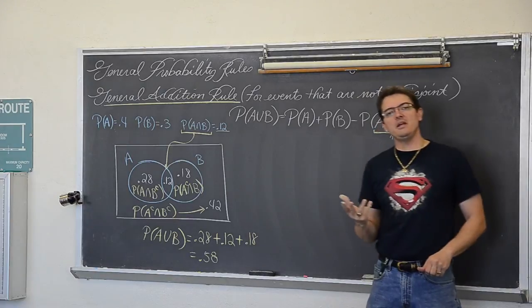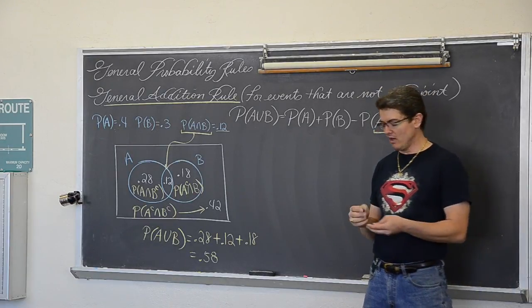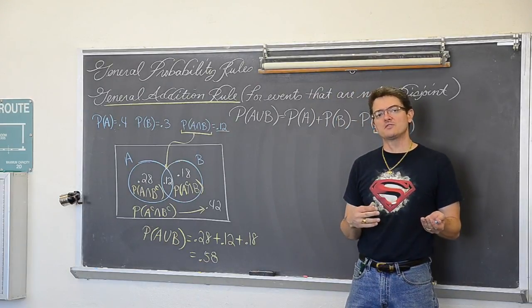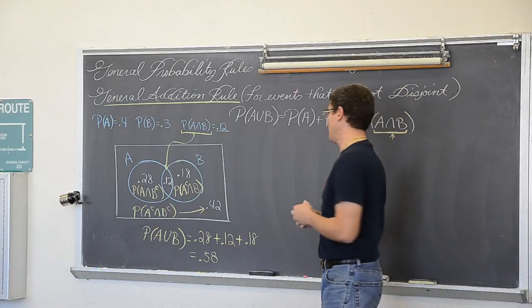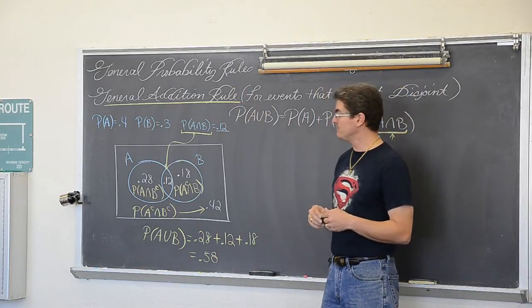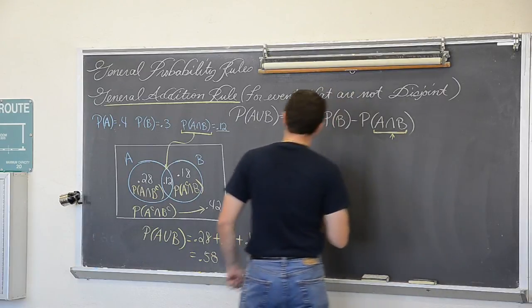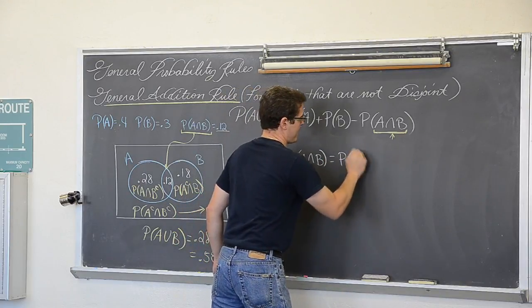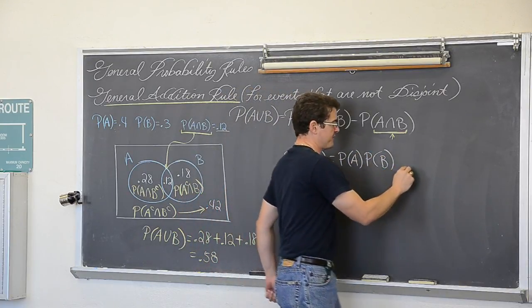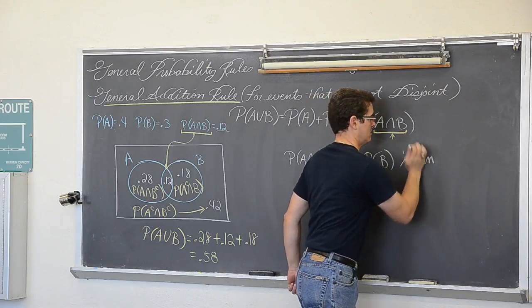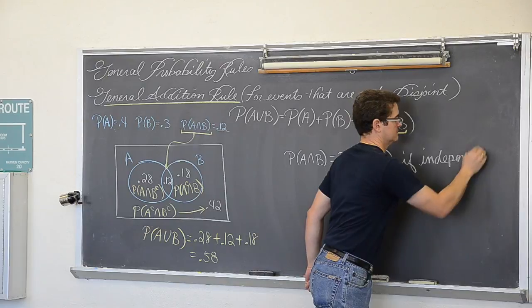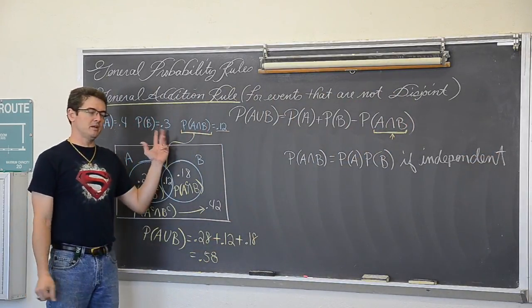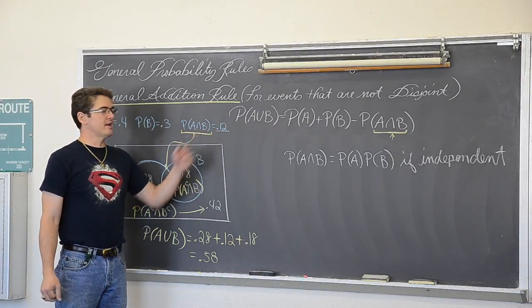Now, before I move on to the next topic, are A and B independent of each other? Well, one of your probability rules that you learned in the previous video, the intro to probability videos, excuse me, I have my words all mixed up, says the probability of A and B equals the probability of A times the probability of B if they are independent.